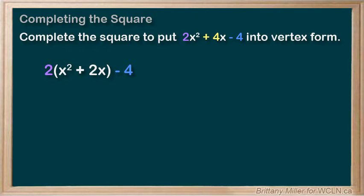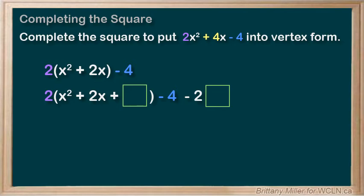Then we add our boxes. We add one box inside of the brackets, which means it's actually multiplied by that 2. So we need to subtract 2 times the box on the end, keeping things equal.